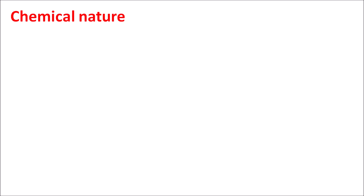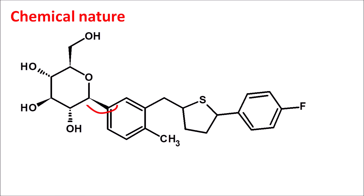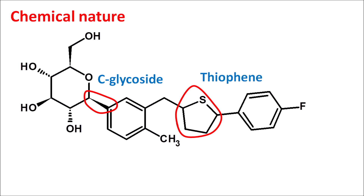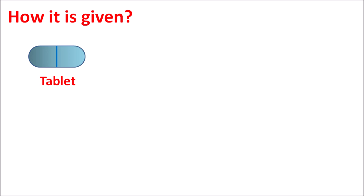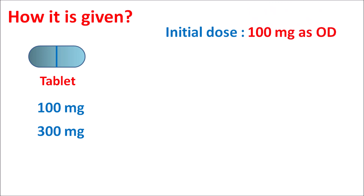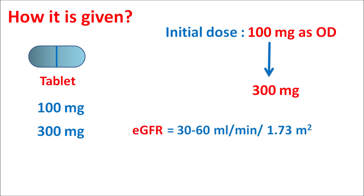Regarding the chemical nature of canagliflozin, it is a C-glycoside with a thiophene-containing moiety, and we can observe the linkage to the sugar moieties and the heterocyclic thiophene ring system. This drug is available as tablets at two strengths: 100 mg and 300 mg. The initial dose is 100 mg once daily before the first meal of the day, and it can be increased up to 300 mg once daily based on efficacy. In patients with renal dysfunction where eGFR is around 30–60 mL/min, the drug should be used only at the 100 mg dose once daily.